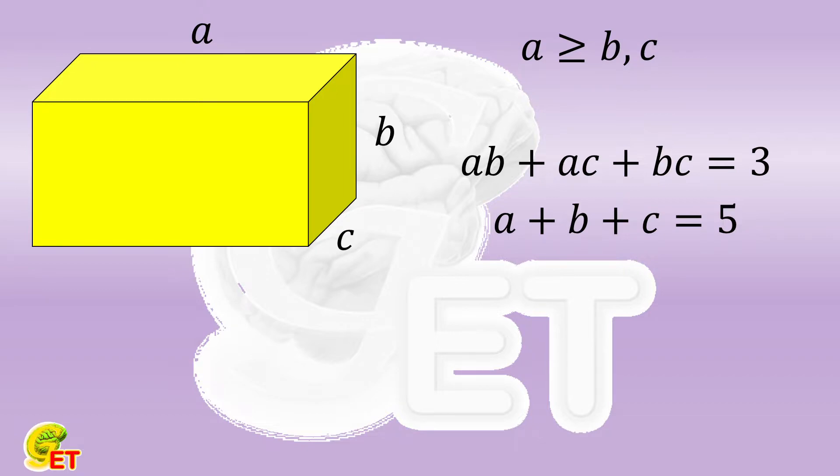There are three variables, and it is usually not easy to calculate the maximum or minimum value of one of the variables in this case. In general, the cases of fewer variables are simpler. In comparison, the case of two variables would be simpler, and the case of one variable is best.